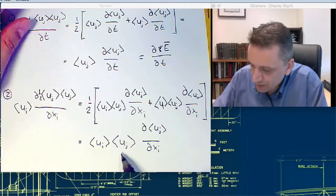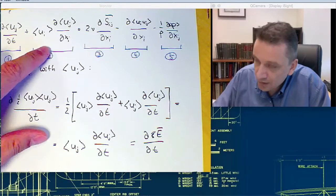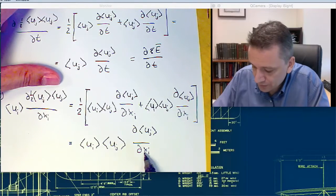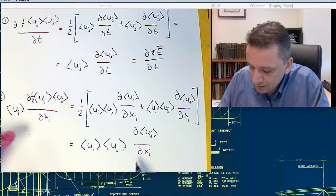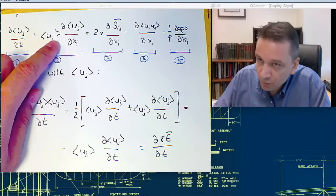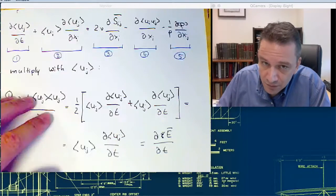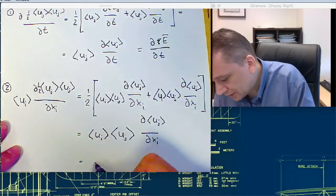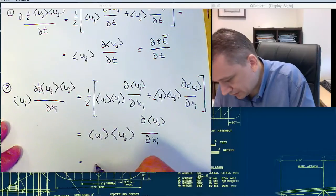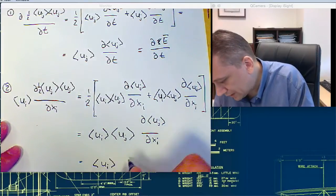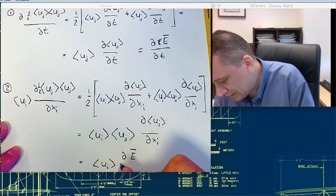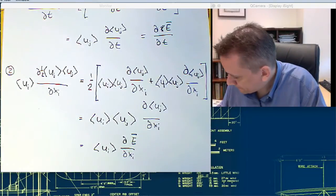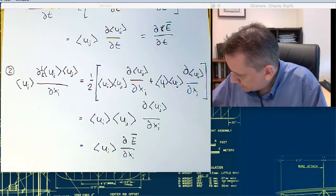And this is essentially the term over here, term 2, this term 2 times uj. You see, you have here term 2 times uj. So essentially if I multiply this term over here with uj, I'm going to get this term. This one is essentially ui times d e dxi.